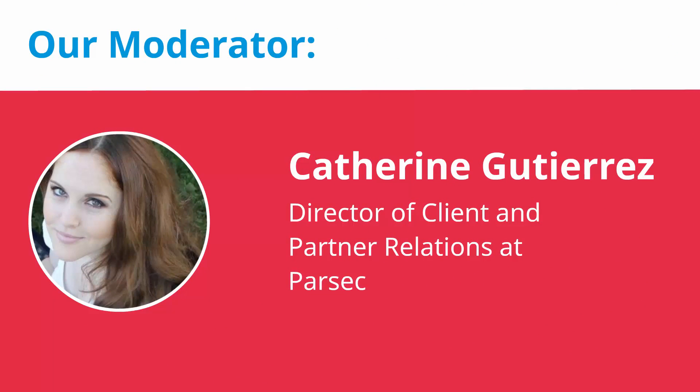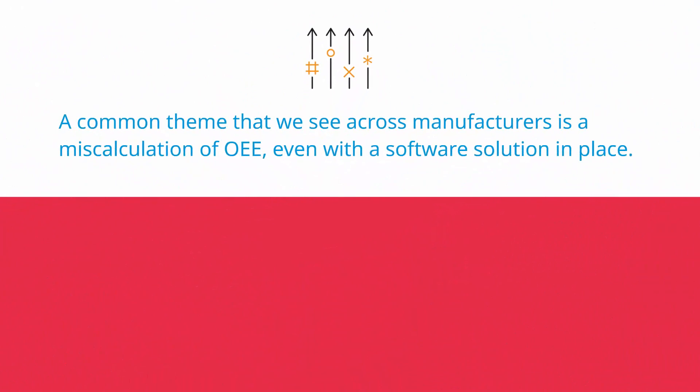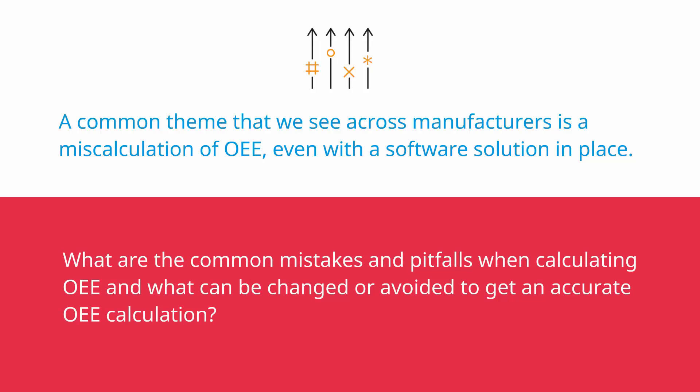Today we will be focusing on first steps with Traxxas. I'd like to start off with asking you about a common theme that we see across manufacturers, and that is a miscalculation of OEE, sometimes even with a software solution in place. From your perspective, can you share some of the common mistakes and pitfalls when calculating OEE, and what can be changed or avoided to get an accurate OEE calculation?